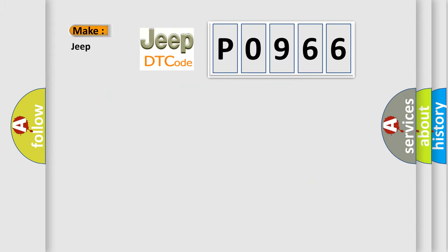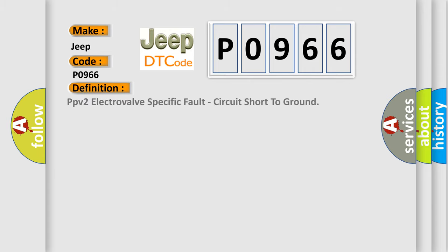So, what does the diagnostic trouble code P0966 interpret specifically for Jeep car manufacturers? The basic definition is PPV2 electrovalve-specific fault, circuit short to ground.